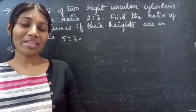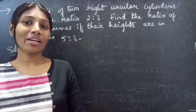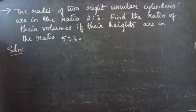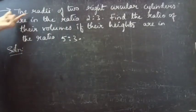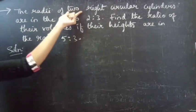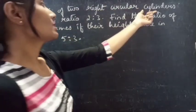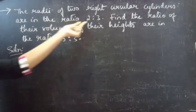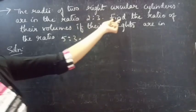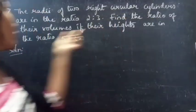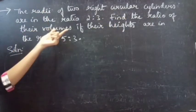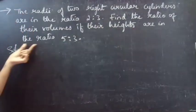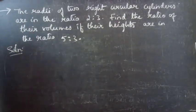Hello everyone, this is Dayakalpina here. In this video we are going to see a problem from mensuration. The problem: the radii of two right circular cylinders are in the ratio 2 is to 3. Find the ratio of their volumes if their heights are in the ratio 5 is to 3.